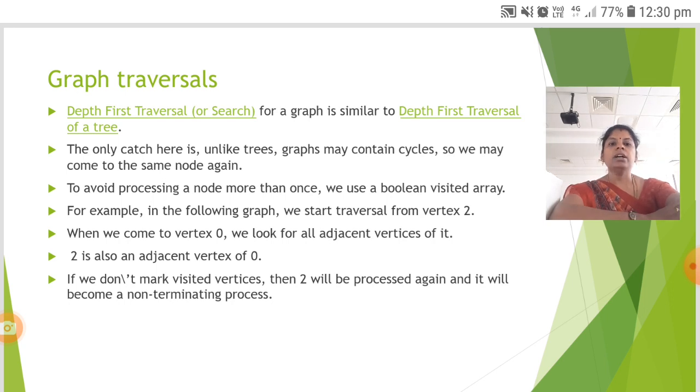For example, when we come to vertex 0, we look for all the adjacent vertices of it. 2 is also an adjacent vertex of 0. If we don't mark visited vertices, then 2 will be processed again and it will be a non-terminating process.